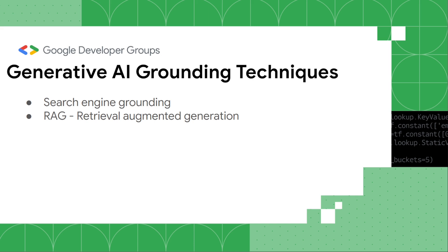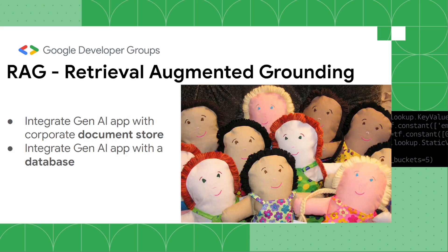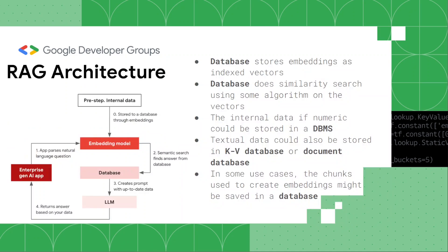Grounding can be done in two ways: search engine grounding, or RAG — retrieval augmented generation — which is still important. RAG means connecting a foundation model to a corporate document store or database. In the architecture, we take our document store or database, run it through something like LangChain to create embeddings, and store those embeddings as vectors in a database. The key point is that databases are everywhere in these applications — they're not much talked about, but they're essential at every step.